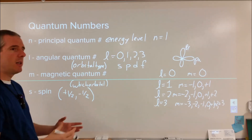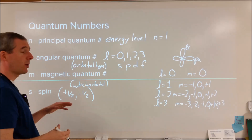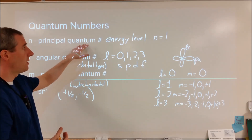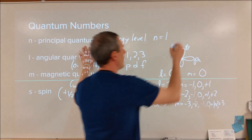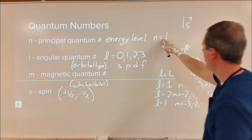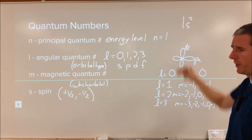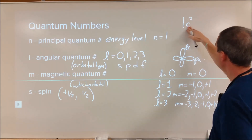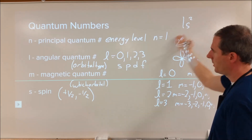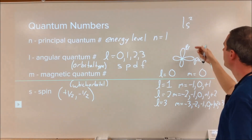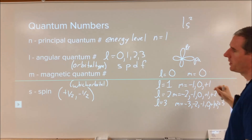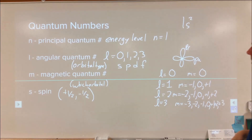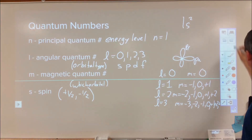These four quantum numbers combine to give you information about what your electron is doing. The electron configuration is a brief summary of what those electrons' quantum numbers are. N is the first number of your electron configuration — in 1s2, the 1 tells you it's in the first energy level, close to the nucleus. The s is derived from the angular quantum number L, and the 2 tells you how many electrons are in those two particular states.